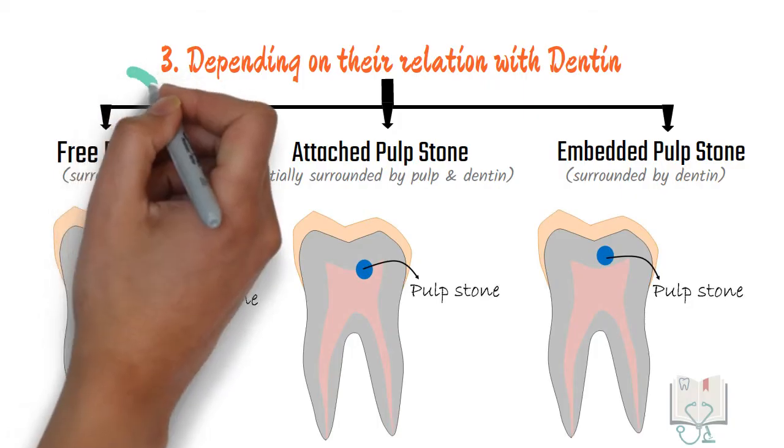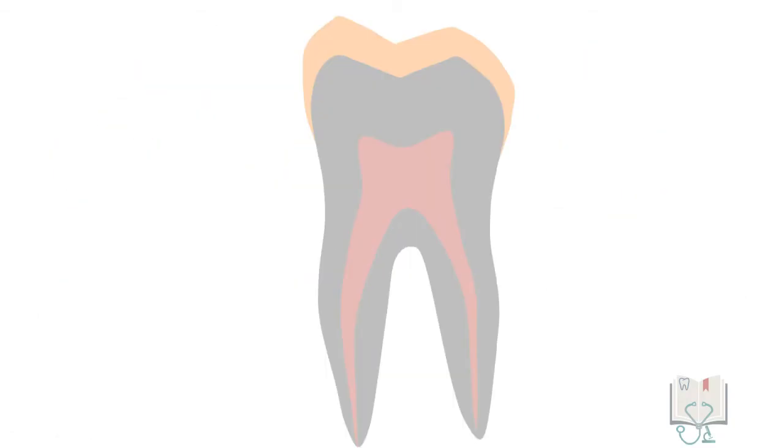Formation of pulp stones in relationship to dentine: It is theorized that initially all pulp stones formed are free pulp stones. With time, as secondary dentine deposition continues and size of the pulp chamber reduces, the pulp stone first gets attached to the dentine and then finally gets completely embedded in dentine.